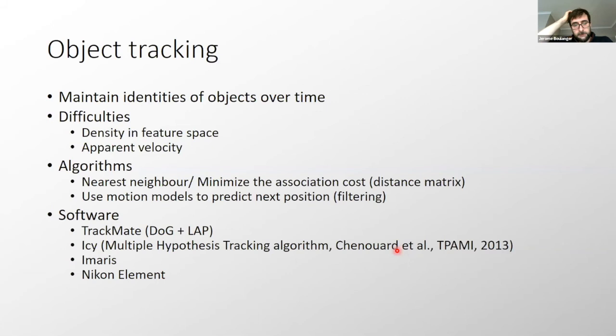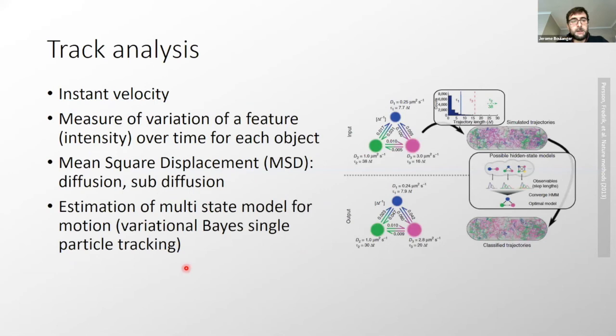Then you can use motion model to predict the next position given the past of the particle and if you want to use also the feature because you have access to past feature will be Kalman filtering, the simplest version of this. From a point view of software you will have access to this in Fiji. You can use TrackMate which includes difference of Gaussian and the linear assignment problem to minimize the distance matrix. In IC, you have a more sophisticated tracking algorithm called the multiple hypothesis tracking algorithm. You have also similar to TrackMate in Imaris. Once you have your spot you can use this linear assignment problem formulation to track your object. You have also a tracking module in Nikon Elements in one of the versions we have in the analysis room.